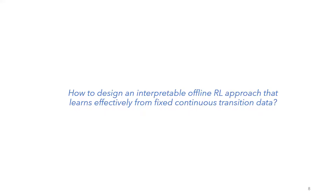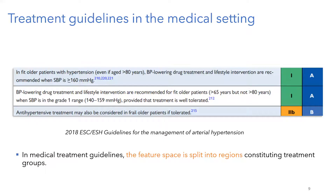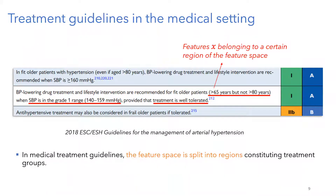The idea of this new approach comes from the way doctors, or any practitioner, design decisions applied in real life. For example, this table from treatment guidelines for arterial hypertension management shows a pretty natural way of writing treatments — in a decision tree form. We decide what conditions on features apply: age in a certain range, blood pressure (SBP) in a certain range, and some medical history information. This constructs a decision tree in the feature region, then prescribes a treatment.